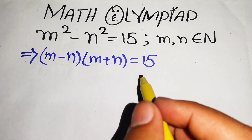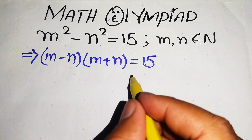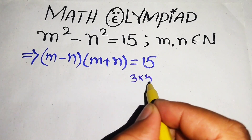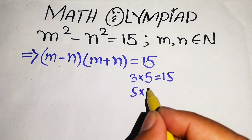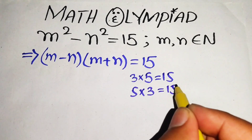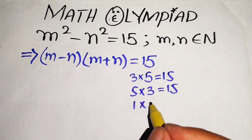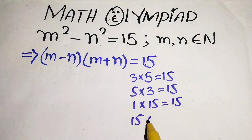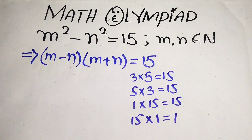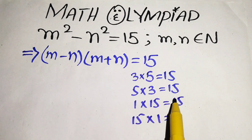The pairs of natural numbers whose product is 15 are: 3 times 5, 5 times 3, 1 times 15, and 15 times 1. So we have four pairs of natural numbers whose product is 15.